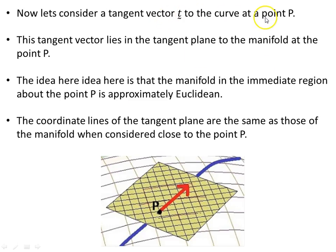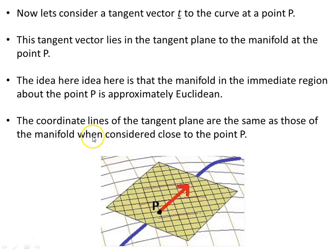We have our tangent vector T to the curve at point p, lying in the tangent plane to the manifold at p. The manifold in the immediate region about p is approximately Euclidean. The coordinate lines of the tangent plane are the same as those of the manifold — they are inherited from the manifold, as can be seen in the close-up view near point p.